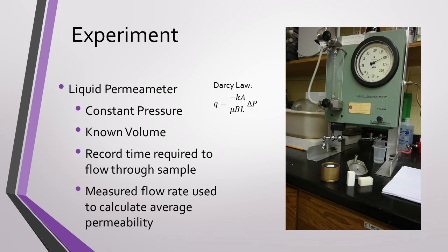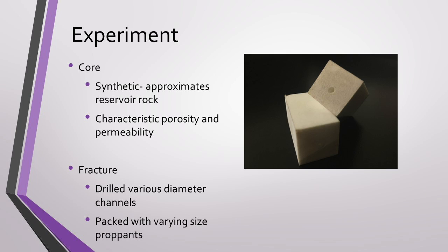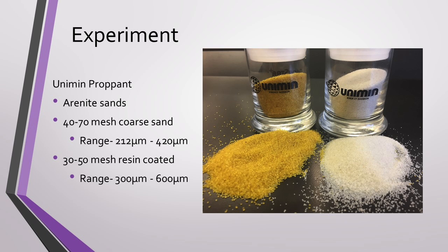In our experiment, we utilized a liquid permeameter, which uses constant pressure in a known volume in combination with the recorded time for flow through the sample to calculate average permeability given a measured flow rate. Our approach utilized a synthetic core with porosity and permeability approximating reservoir rock. To create a fracture, we drilled various diameter channels into the different cores and proceeded to pack the cores with varying size proppants. The proppant was generously provided by Unamin — pictured here are two sample jars — and Unamin was also kind enough to ship us a five-gallon container for our future experiments. The sands provided are Aronite sands with 40-70 and 30-50 mesh; one is a coarse sand and the other is resin-coated, although the specific benefits of resin-coated sand outside of the increased diameter did not apply to this experiment.